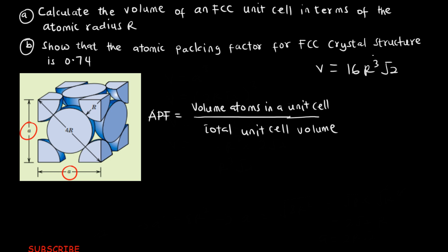We need to calculate the volume of atoms in the FCC unit cell. An FCC unit cell has 4 atoms in it. Each atom is considered to be a sphere, and the volume of a sphere is (4/3)πR³.